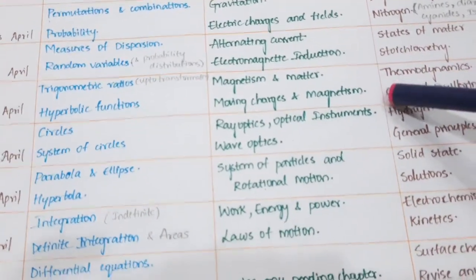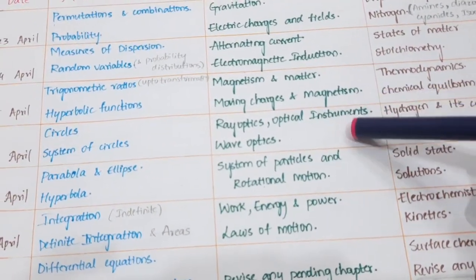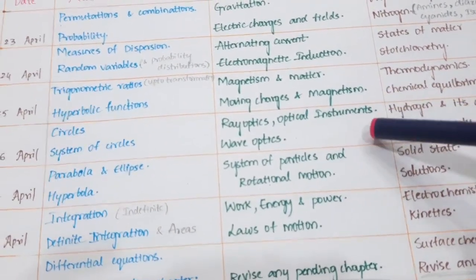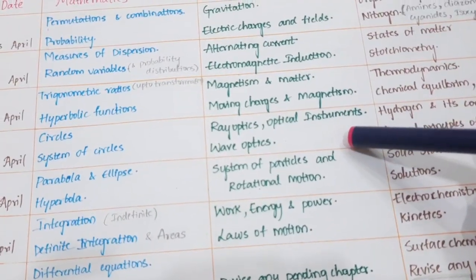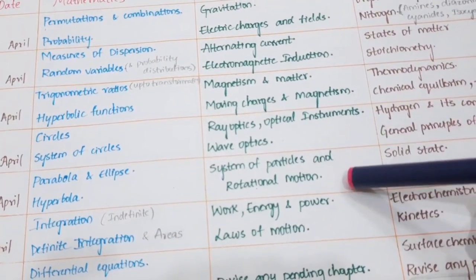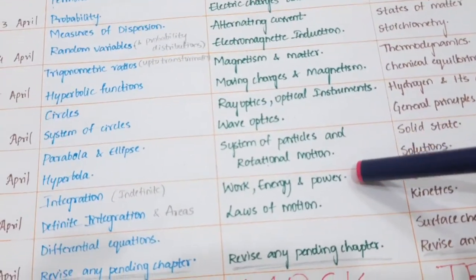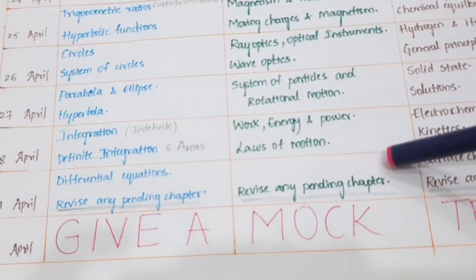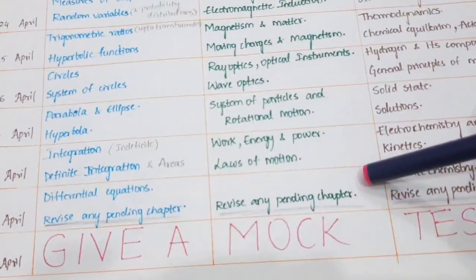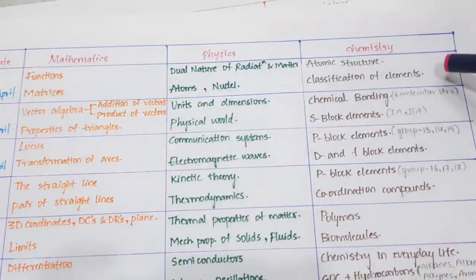24th: Alternating Current and EMI. 25th: Magnetism, Matter, Moving Charges. 26th: Ray Optics, Optical Instruments, and Wave Optics. 27th: System of Particles and Rotational Motion. 28th: Work, Power, Energy, and Newton's Laws of Motion. 29th: Any pending topics — revise.